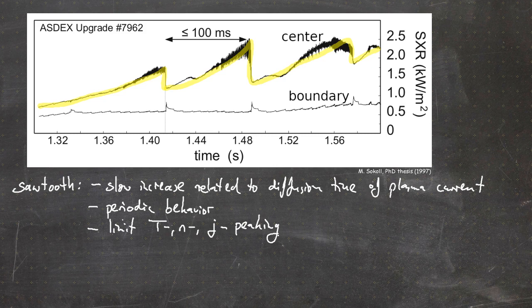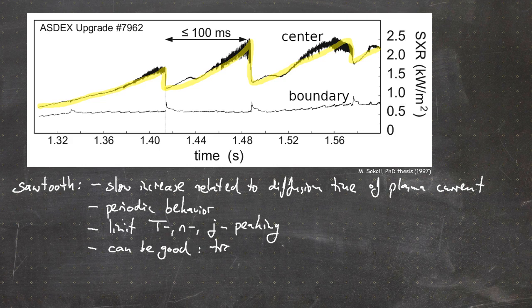This periodic behavior imposes a limit on the temperature, density, and plasma current peaking. It is also a relaxation instability because it relaxes the plasma pressure. The instability can actually be good because in a burning plasma with fusion reactions it can transport the helium ash outwards — though it is only beneficial as long as it is controlled.